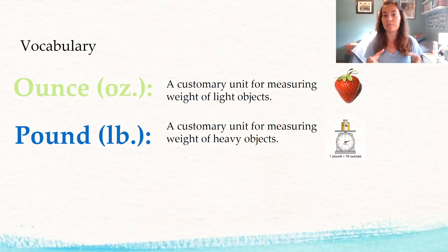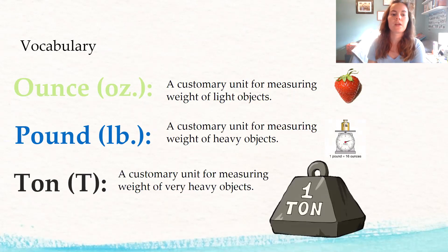So remember an ounce is something you would use to measure a pencil or a strawberry. And I used pounds to measure my bigger plant. I would use pounds to measure my dog and to measure myself. And then a ton is a customary unit for measuring weight of very heavy objects. Remember one ton is about the weight of one car. That's really heavy.